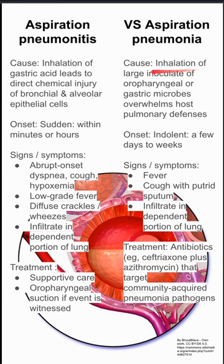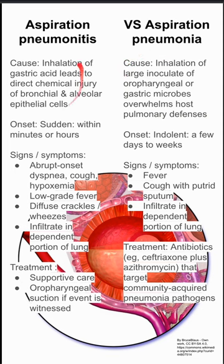Pneumonia is caused by inhalation of a large inoculate of oropharyngeal or gastric microbes, which overwhelms your host pulmonary defenses. So pneumonia is an infection by bacteria, usually, while pneumonitis is a chemical irritation.